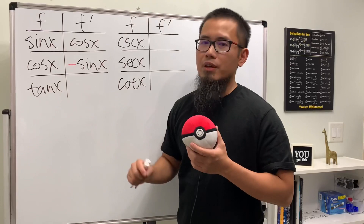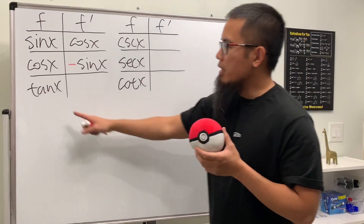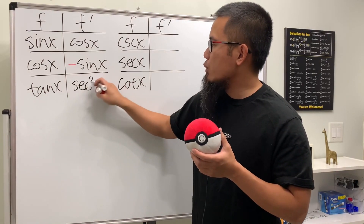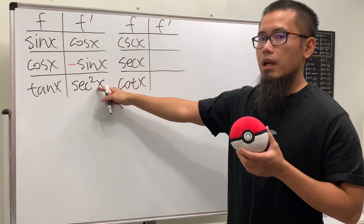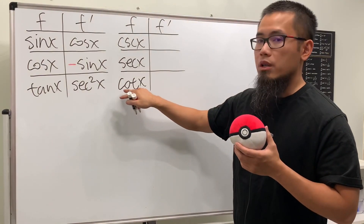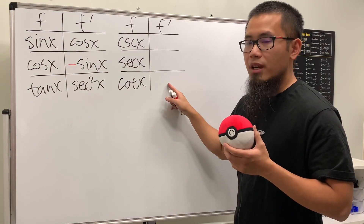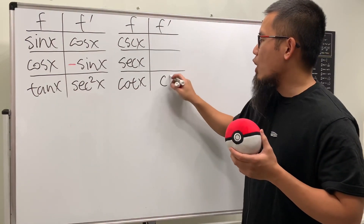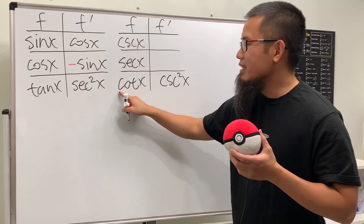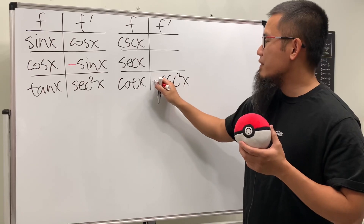Next, tangent and secant are best friends in calculus. The derivative of tangent x is secant squared x — just remember that second power. And once you have that, you can reason out the derivative for cotangent x, because cotangent is the co-function of tangent. So it will be the co-function of secant squared, namely cosecant squared. And since cotangent starts with a 'c', we get a negative: the derivative of cotangent x is negative cosecant squared x.